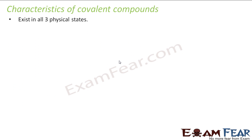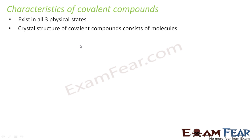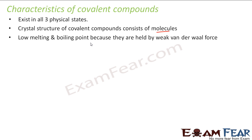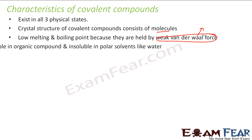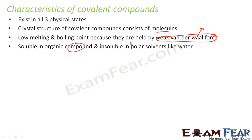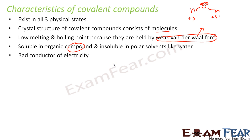Let's discuss the characteristics of covalent compounds. Unlike ionic compounds which exist mostly as solids, covalent compounds exist in all three physical states. Their crystal structure consists of molecules. They have low melting and boiling points because they are held by weak van der Waals forces, which will be explained in the next chapter. They are soluble in organic solvents, insoluble in polar solvents like water, poor conductors of electricity, and their reactions are very slow.